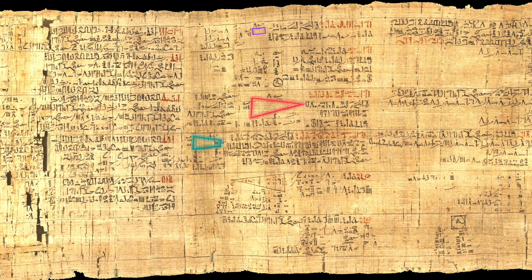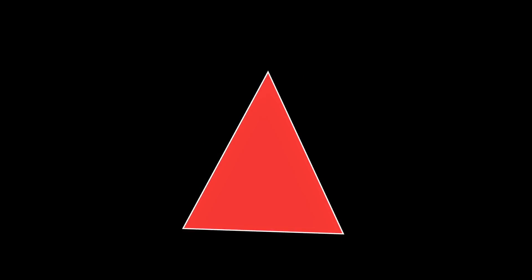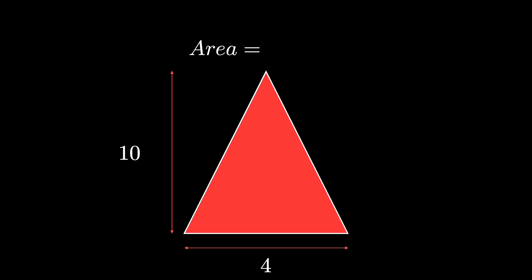Another shape mentioned in the papyrus is a triangle, with a height of 10 ket and a base of 4. The ancient Egyptians used the same formula we use today to calculate the area of the triangle, which is its height times half its base. But how did the ancient Egyptians come up with this formula? The Ahmes papyrus doesn't explain this, but it offers a hint. It talks about transforming the triangle into a rectangle.